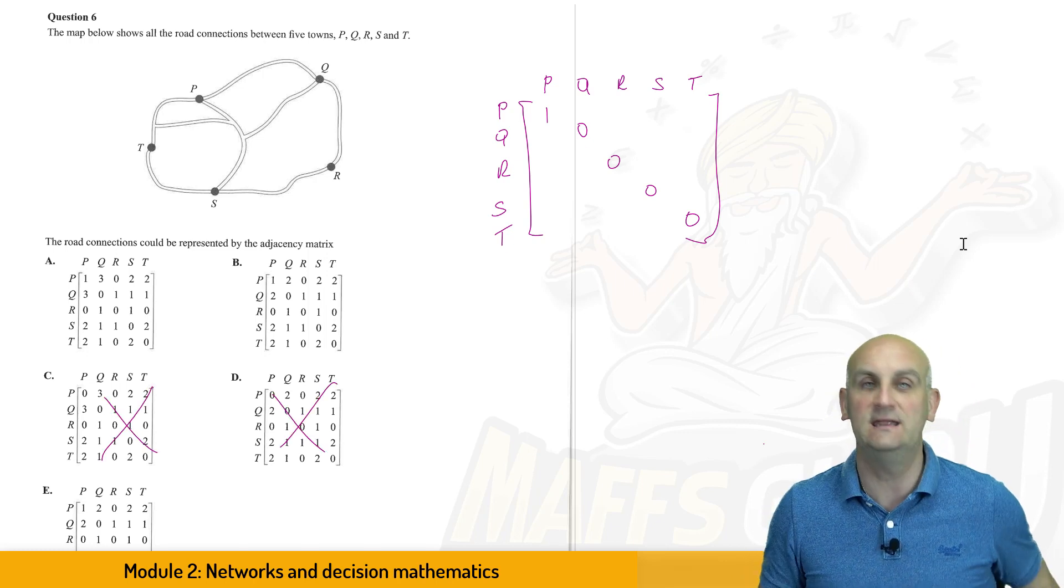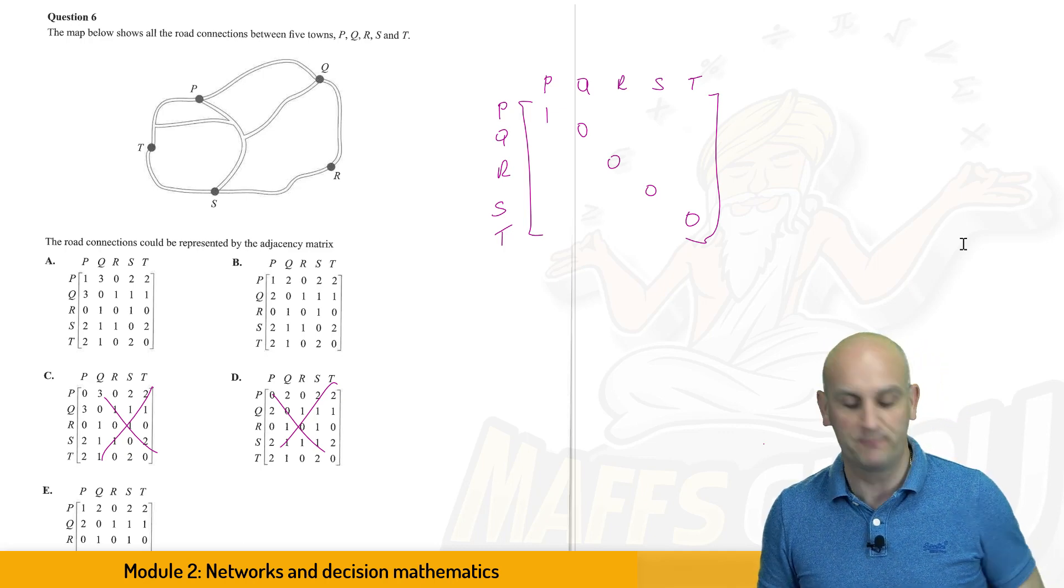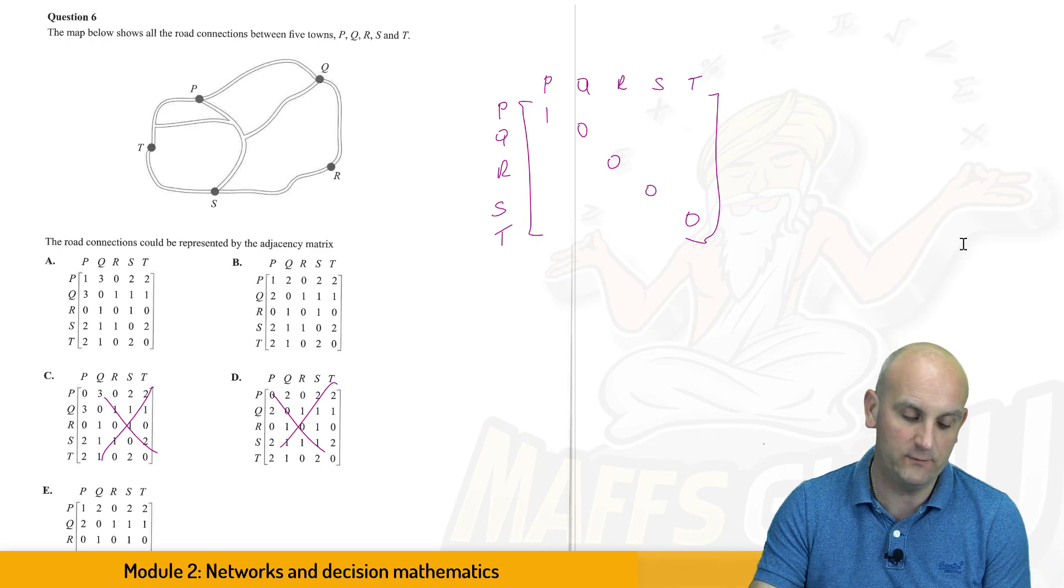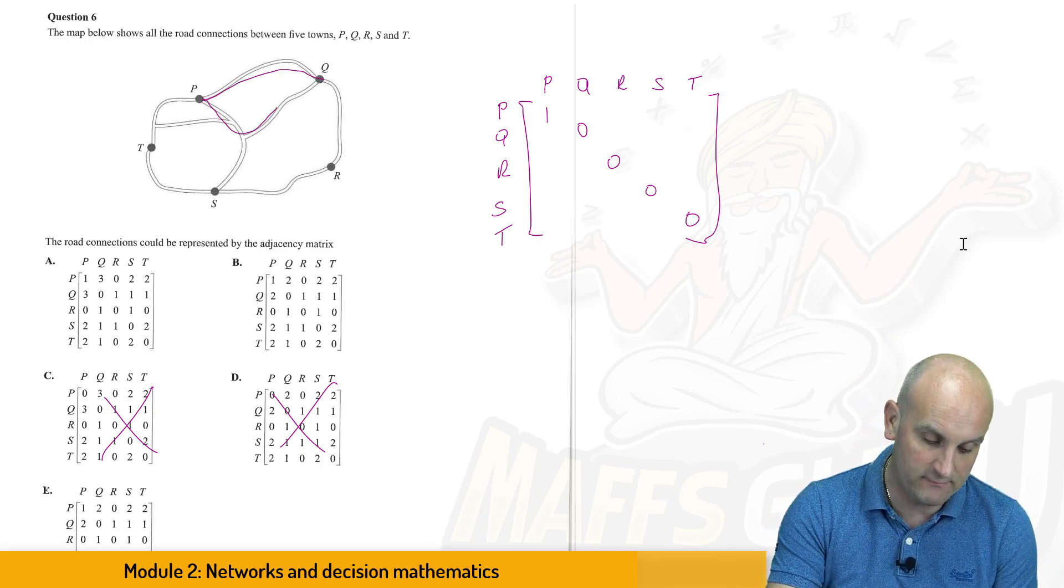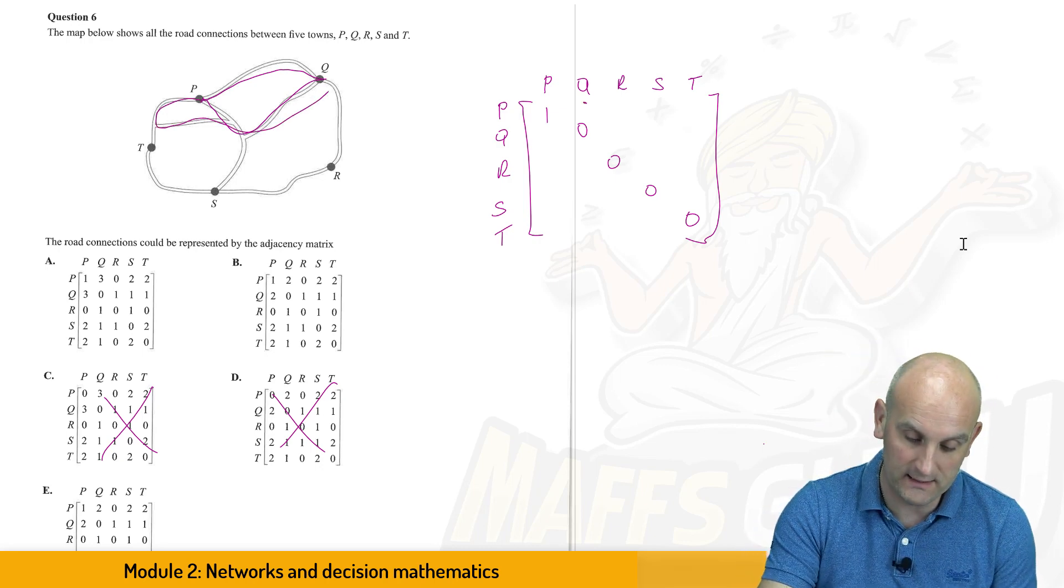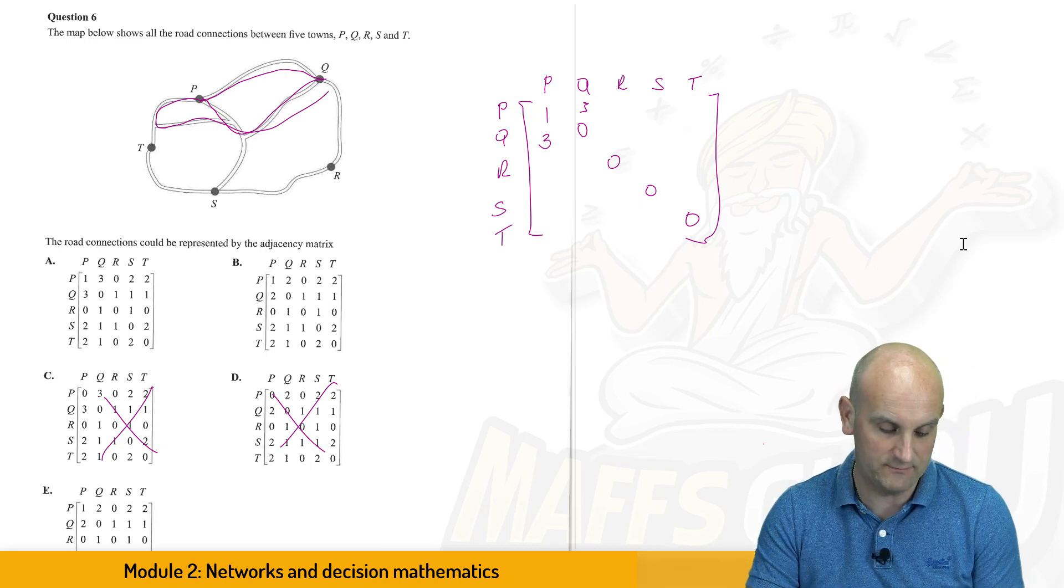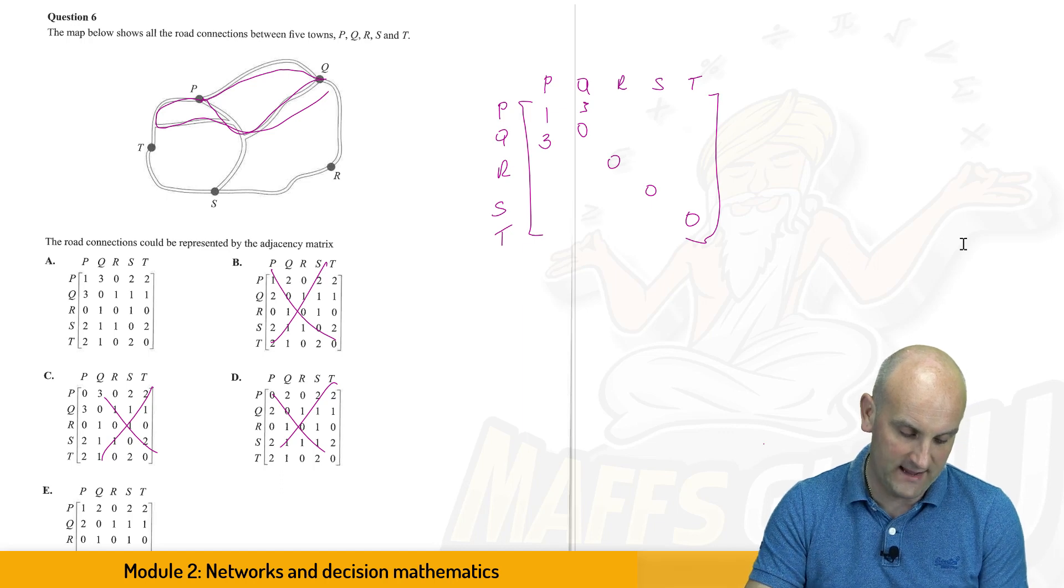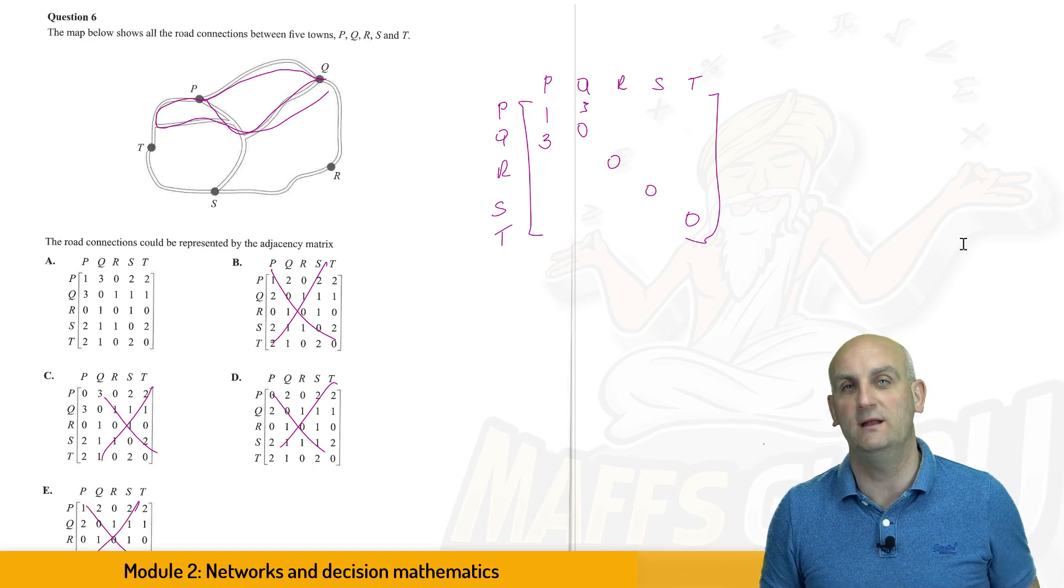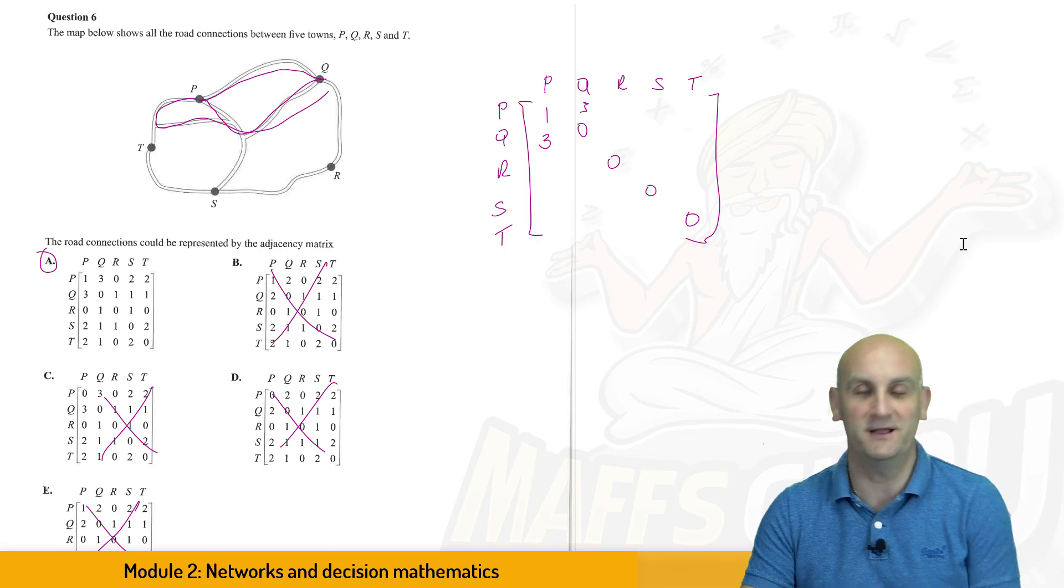Now, let's look and see whether that discounts any of my solutions already. Well, actually, C and D are already off. So we've got three left. Where do we go next? What about P to Q? P to Q. How many different ways are there from P to Q? Well, there is one, there is two. But as it turns out, there are three ways to go from P to Q, and then Q to P. So does that discount any of my solutions now? Well, B is gone. And in fact, so is E. And before I need to go any further, I didn't even have to fill out the rest of that table. A must be my correct answer.